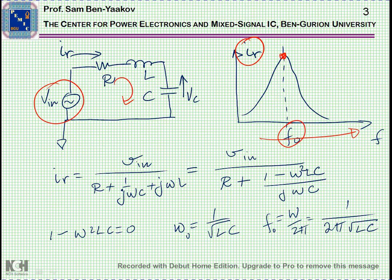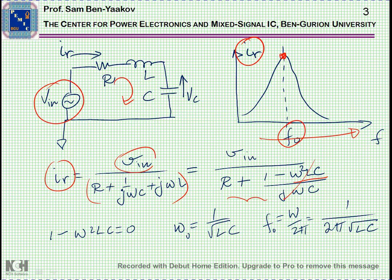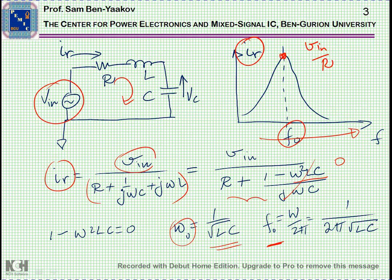This is because if you calculate the current as the input voltage over the total impedance, it ends up as an expression where when omega squared LC equals 1, that term is zero and you get a peak value of VIN over R. The frequency of this peak is the resonant frequency; the angular frequency is 1 over the square root of LC, and the frequency is 1 over 2π times the square root of LC.